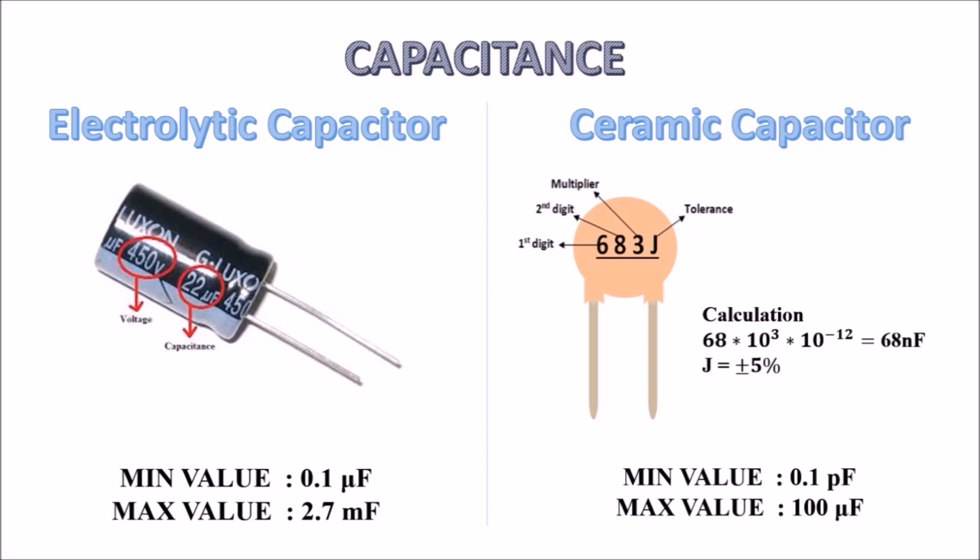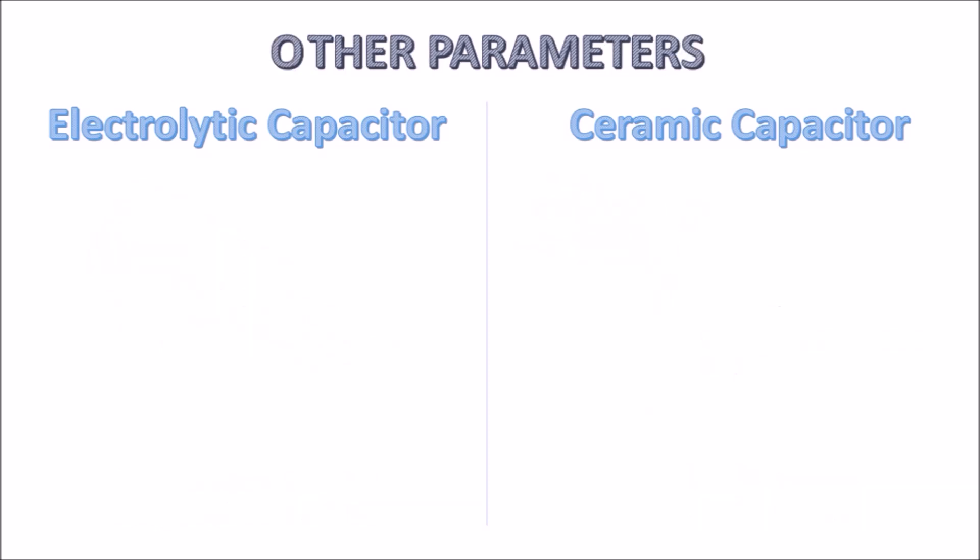Then we go to some more parameters, in which the first one is series equivalent resistance, or ESR. What is ESR? As we all know, every capacitor is not ideal; it has some resistance which is in series with the capacitor. That resistance is called series equivalent resistance. Electrolytic capacitors have high ESR value compared to ceramic capacitors.